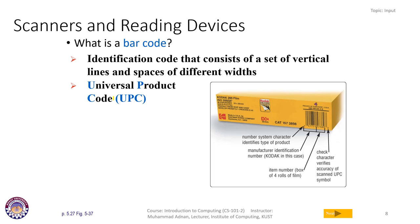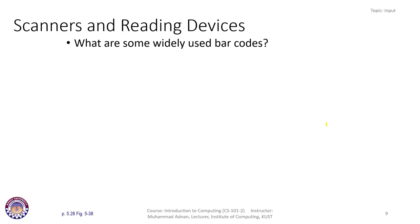Normally, a Universal Product Code (UPC) is printed on a barcode, which tells you the price or other attributes of an item. The barcode contains a number system character that identifies the type of product, a manufacturer identification number, an item number such as a box of four rolls of film, and check characters that verify the accuracy of the UPC scan for authentication.